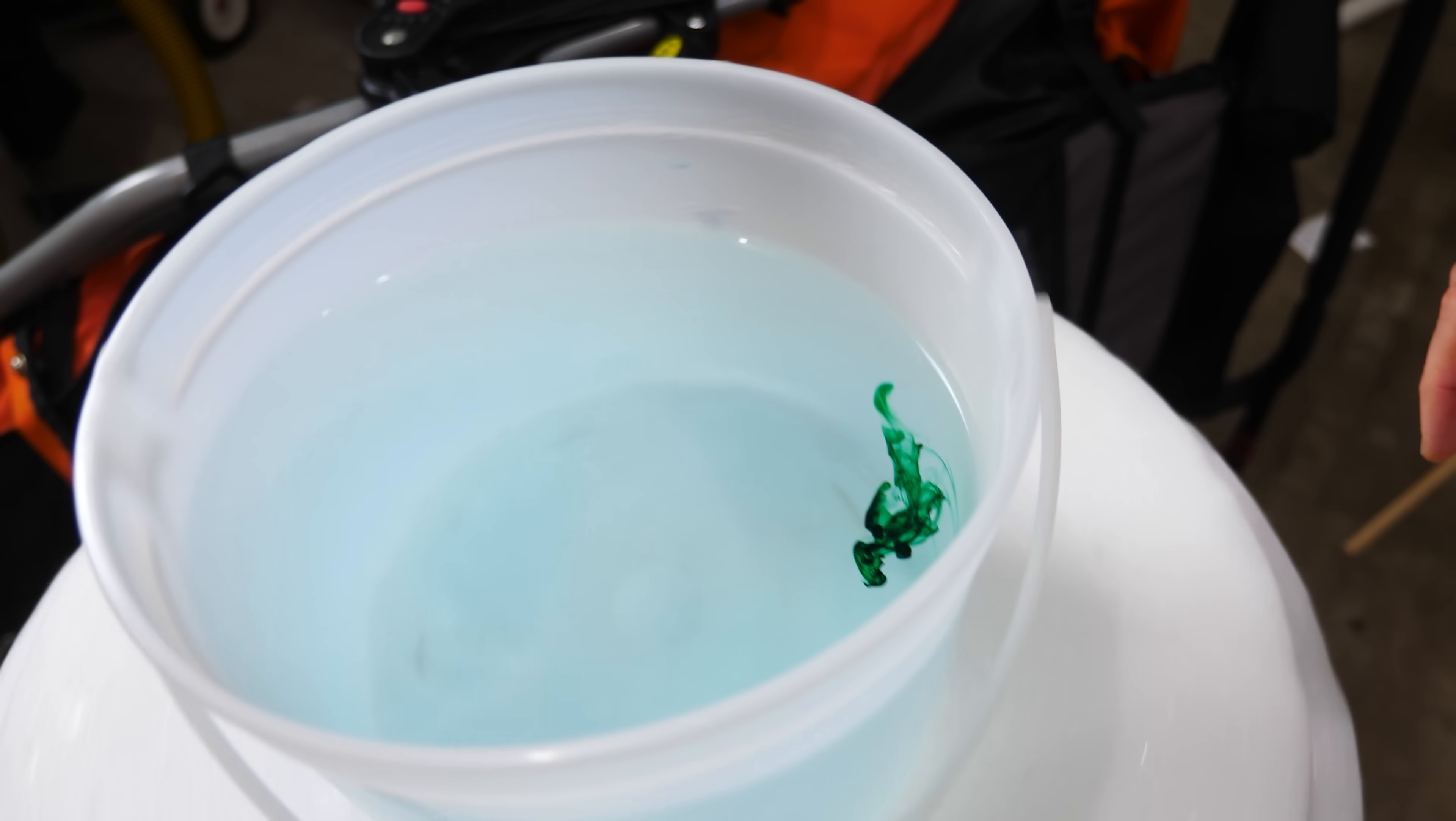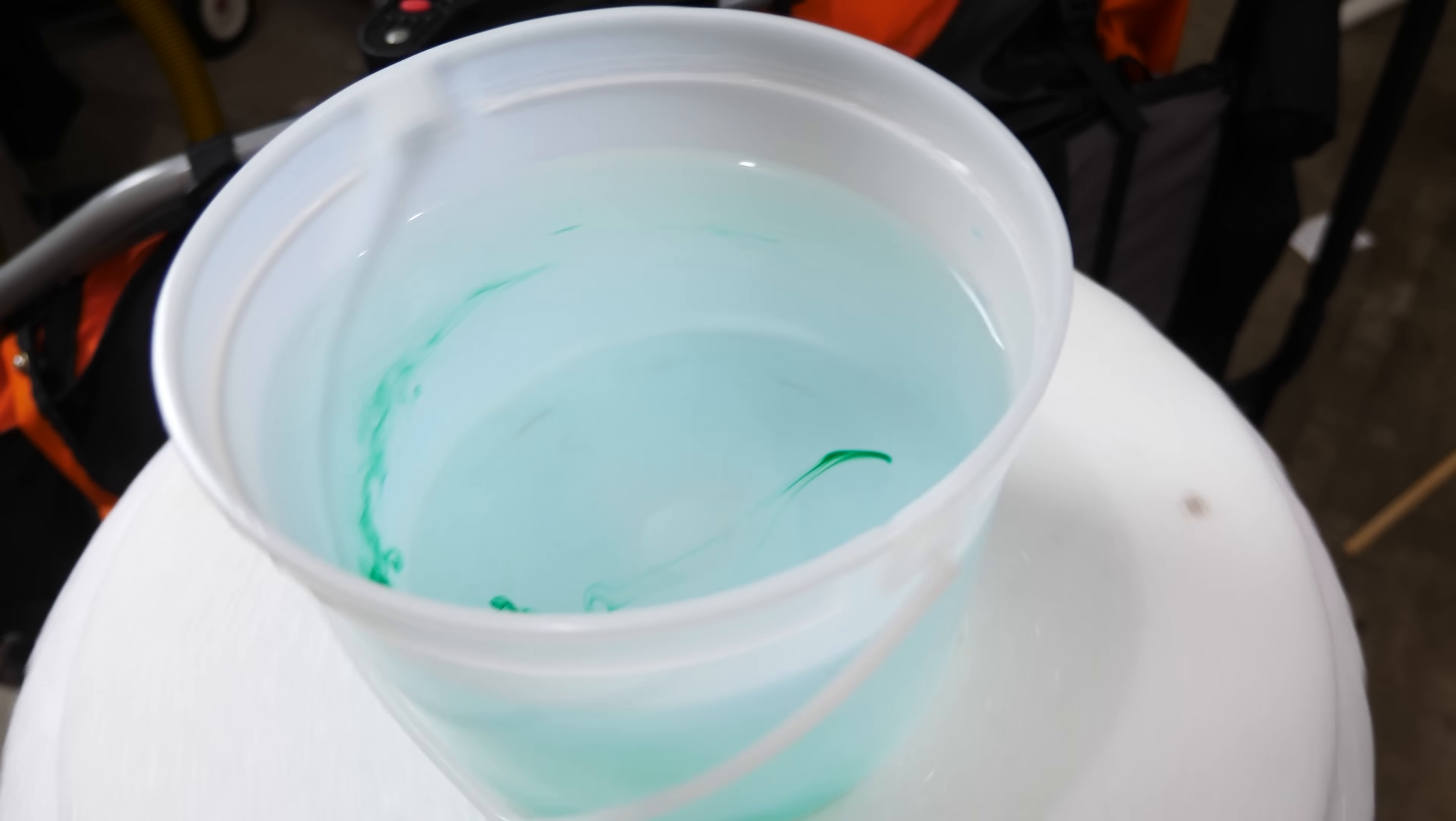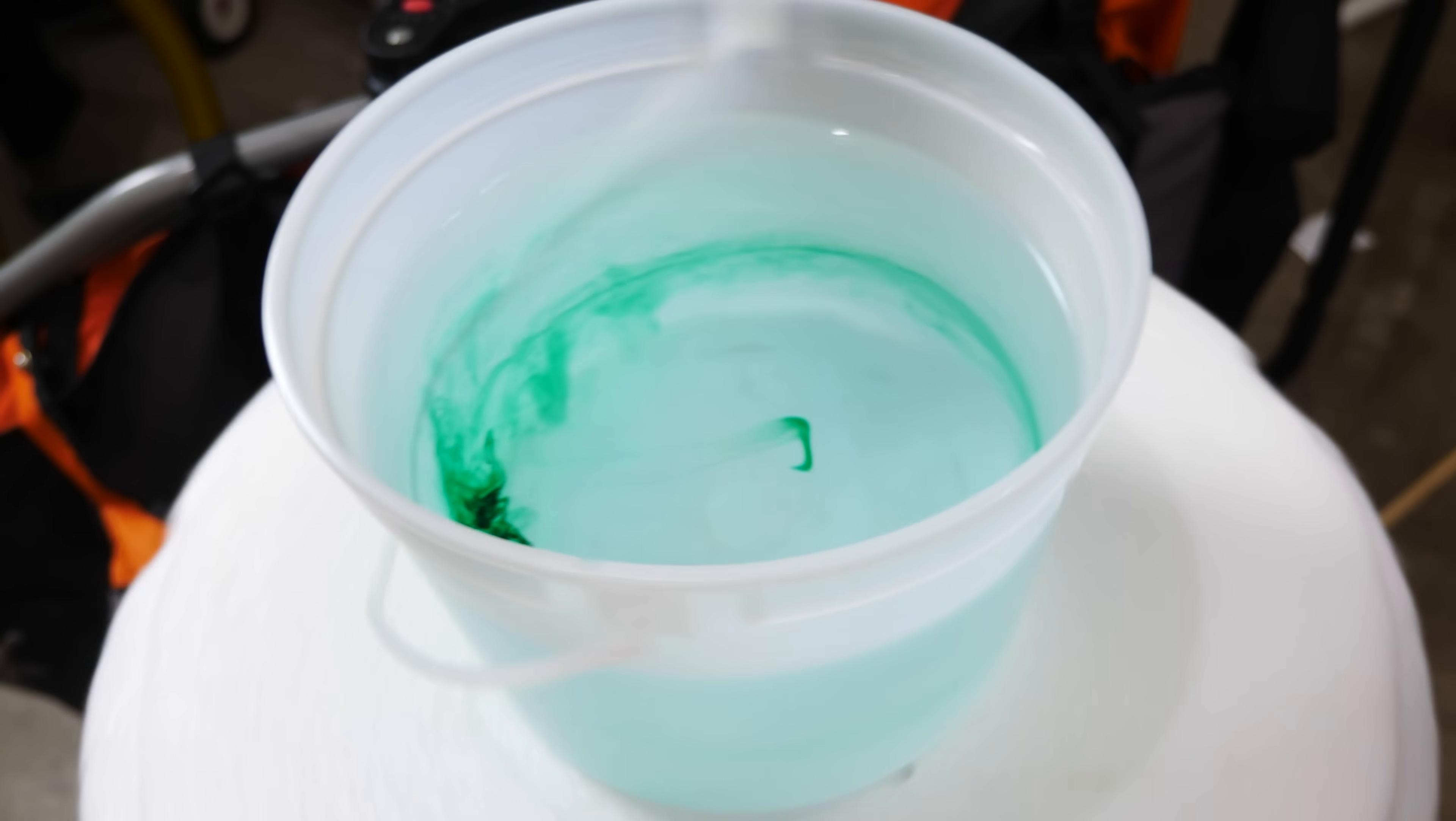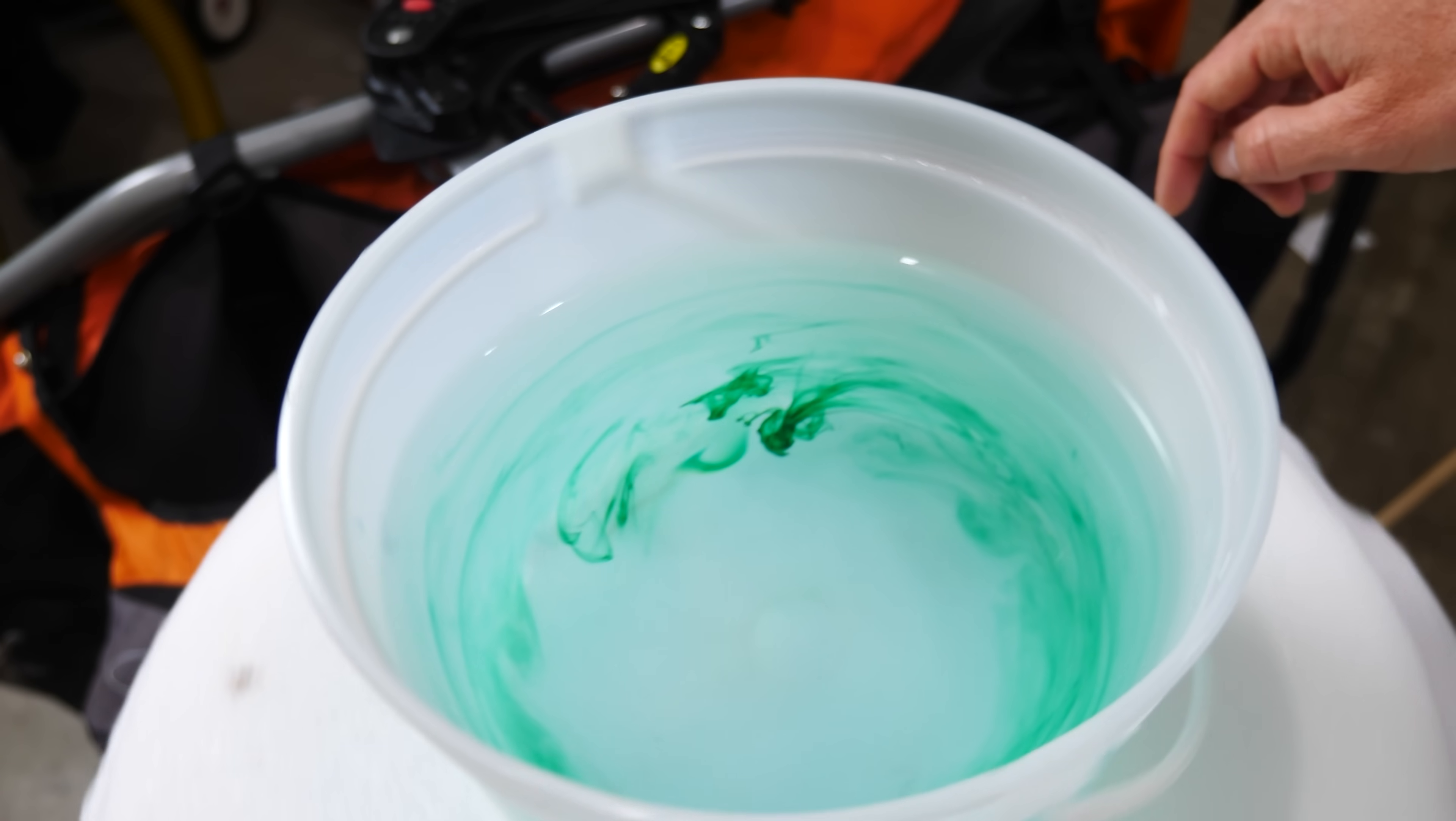Or if you take a bucket of water and some dye, if you put the dye on the edge of the bucket and then spin the bucket, the water on the edge of the bucket is going to get dragged along with the bucket. Whereas the water on the center isn't going to move that much.